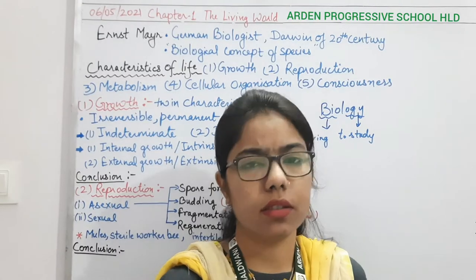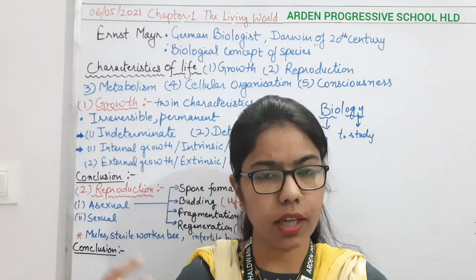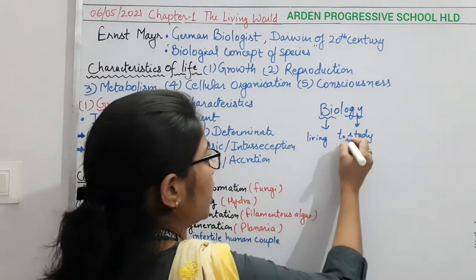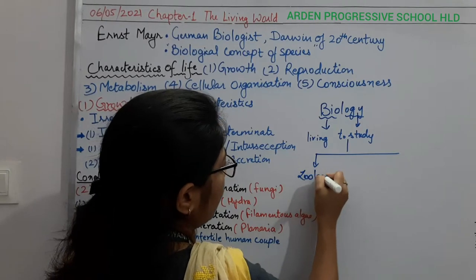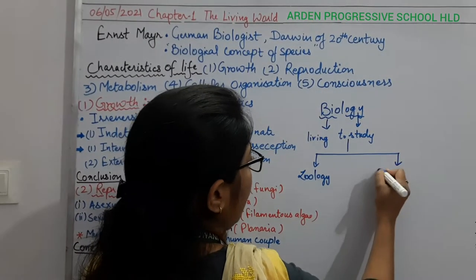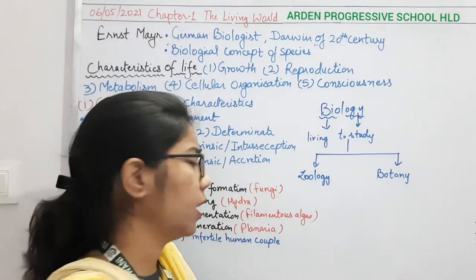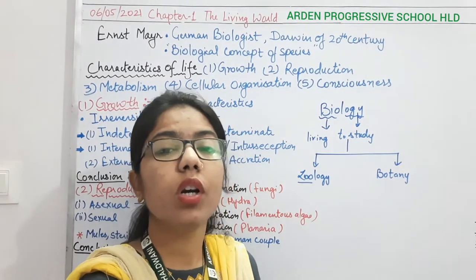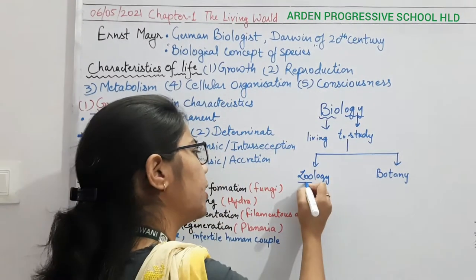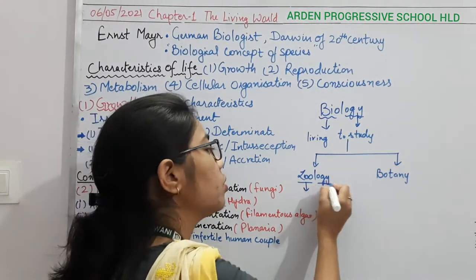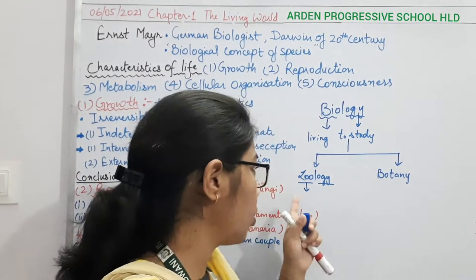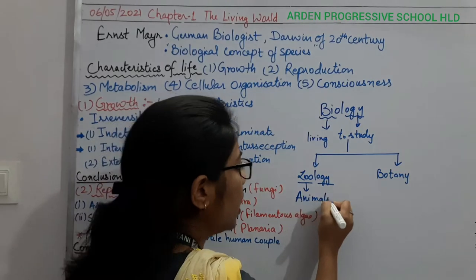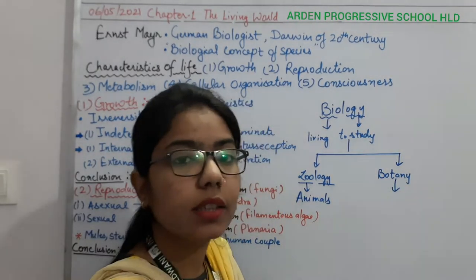Biology is divided into two areas. If we are going to study about plants, there is one area, and if we are talking about animals, there will be another. These two areas are zoology and botany. Zoo relates to animals — if you visit a zoo, you see animals. Zoology means the study of animals. Botany deals with the study of plants.